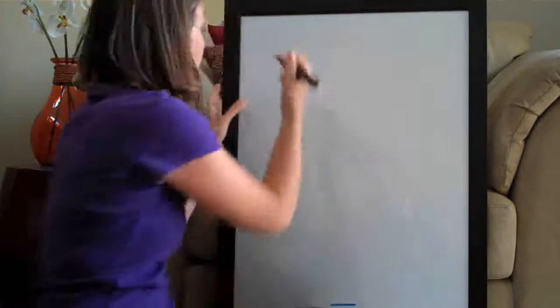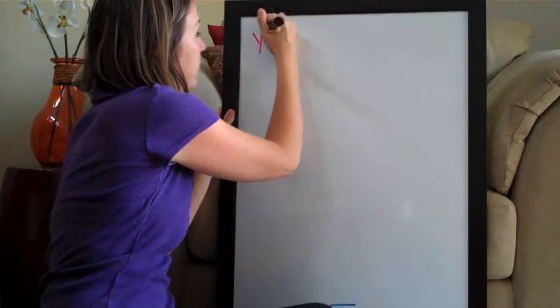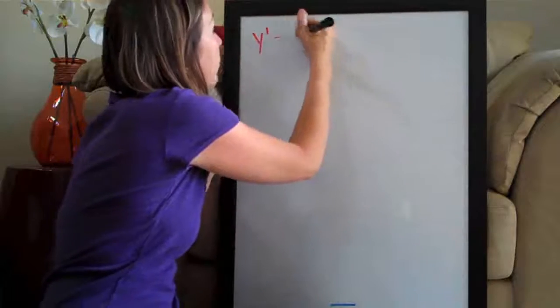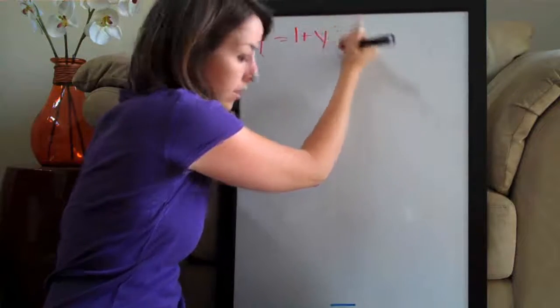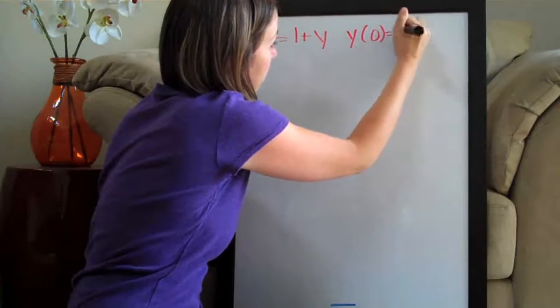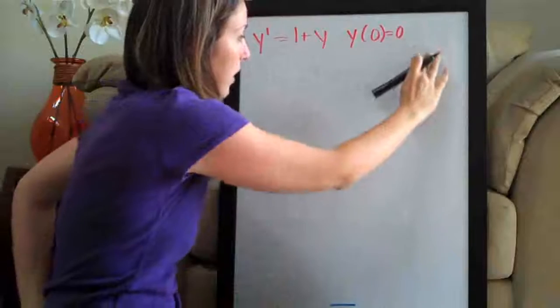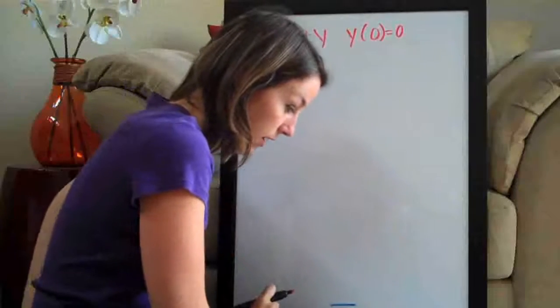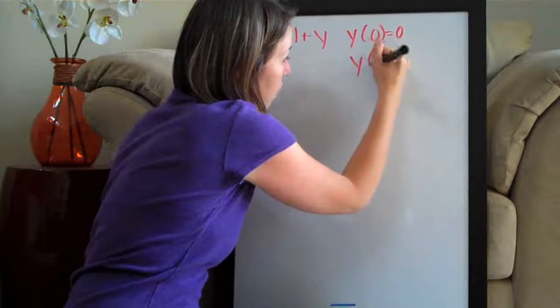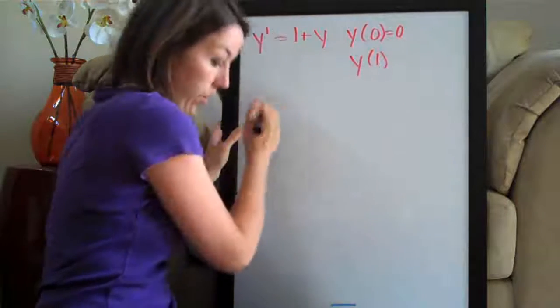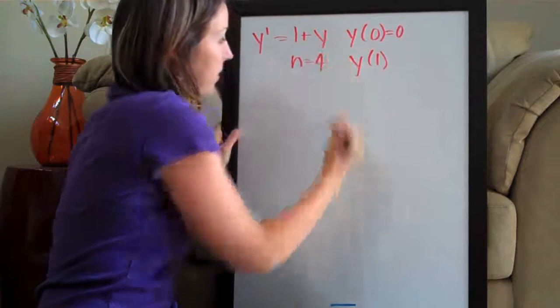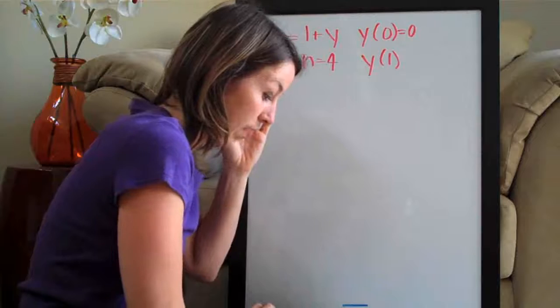This problem, the function that they give us is y prime or the derivative of y equals 1 plus y. The initial condition that's given is y of 0 equals 0 and they're asking us to estimate y of 1 with n equal to 4, which probably doesn't make any sense right now but we'll get it figured out.